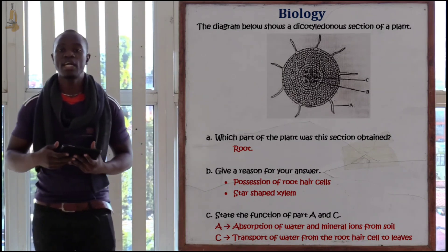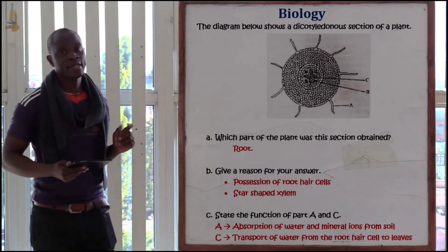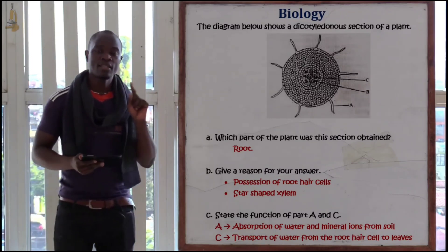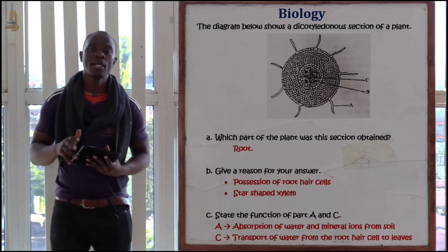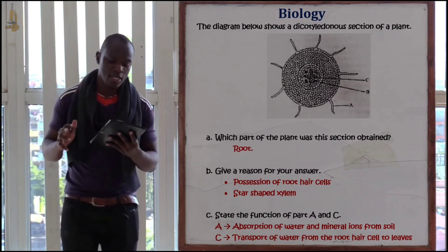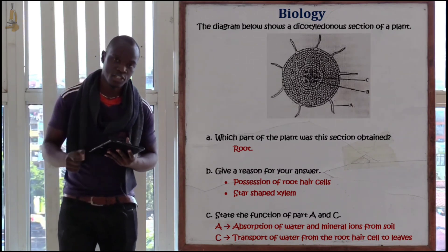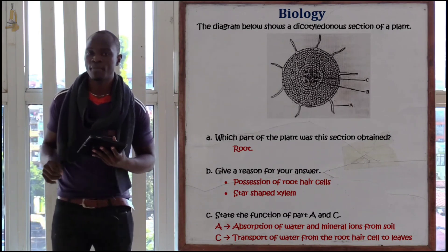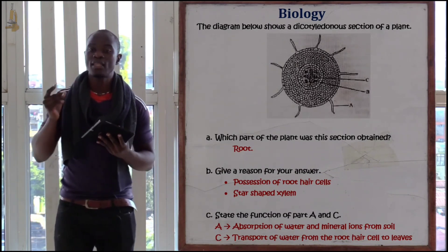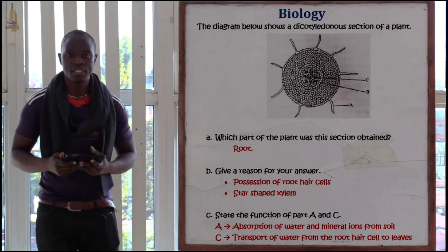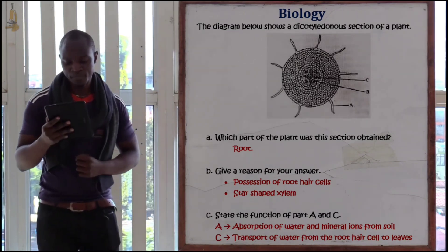Why did we say it was obtained from a dicotyledonous plant? Look at the xylem at the center — the xylem at the center is star-shaped. It is only a dicotyledonous root structure which has a star-shaped xylem. Since we have a star-shaped xylem, this automatically is from a dicotyledonous plant, whereby the phloem always surrounds the star-shaped xylem.